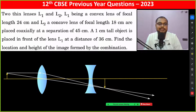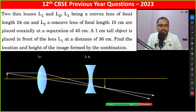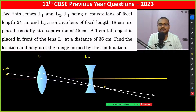Two thin lenses L1 and L2 — L1 is convex and L2 is concave. The object is 1 centimeter in height and it is placed in front of the convex lens.